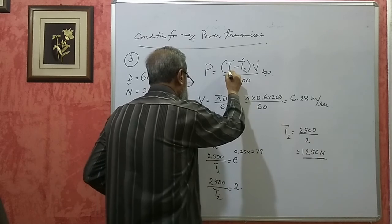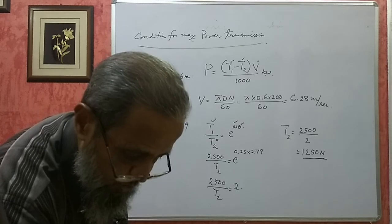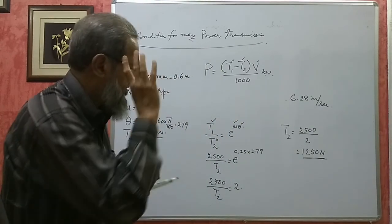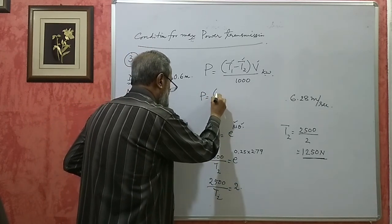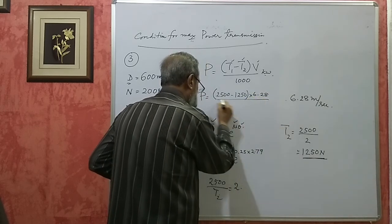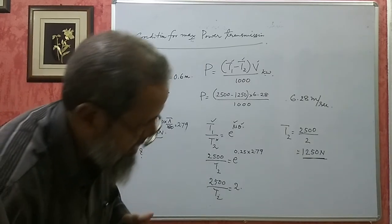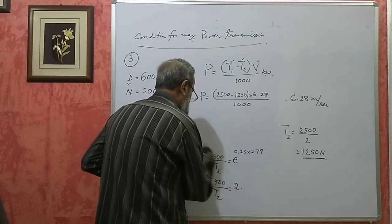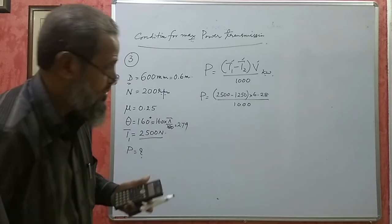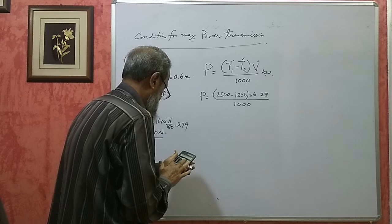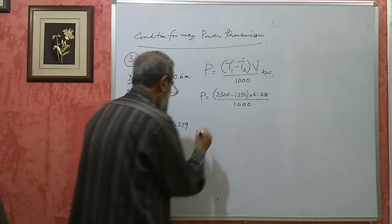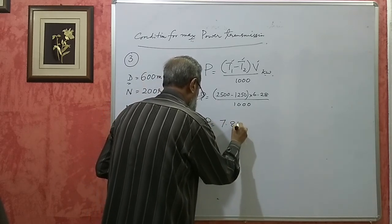Now we have T1 = 2500 N, T2 = 1250 N, and V = 6.28 m/s. So P = (2500 − 1250) × 6.28 / 1000 = 1250 × 6.28 / 1000 = 7.85 kilowatts. The power transmitted is 7.85 kW.